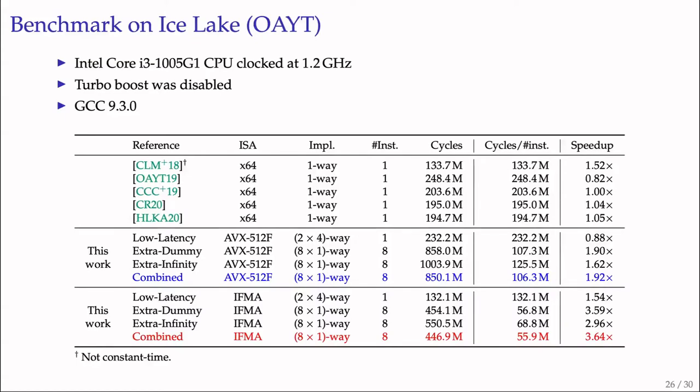As shown in the table, our two-way low-latency IFMA implementation has roughly the same latency as the original non-constant-time implementation and is about 1.5 times faster than baseline. Our eight-times-one-way IFMA implementation with combined batching method achieves 3.64 times higher throughput compared to baseline. Analysis of execution times shows all IFMA implementations are nearly 1.9 times faster than corresponding AVX-512F implementations, confirming IFMA extension significantly accelerates CSIDH compared to general AVX-512F.